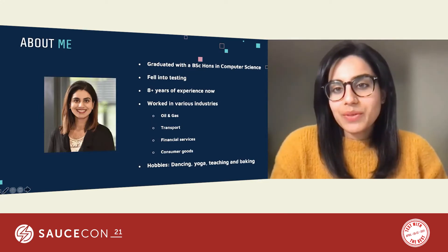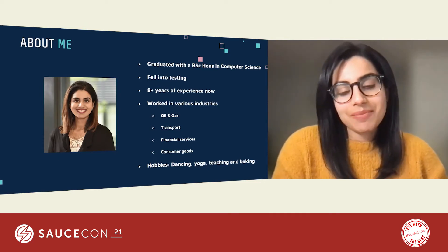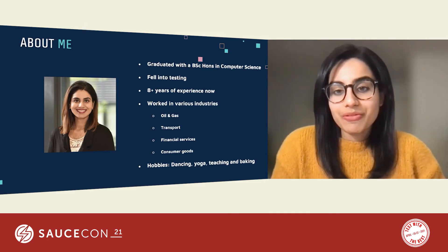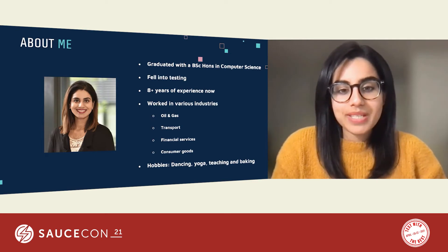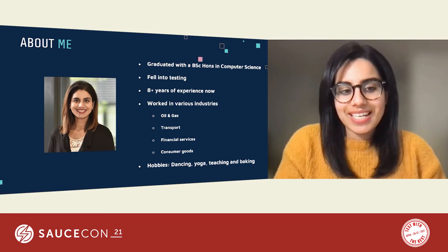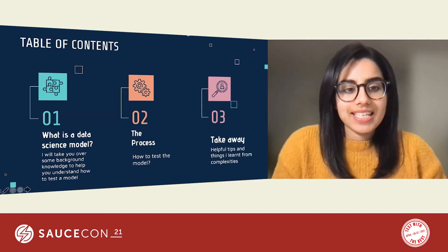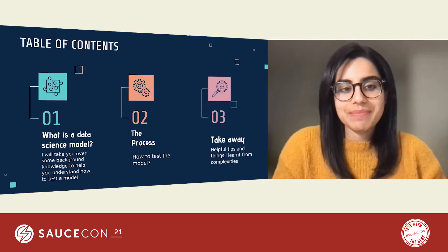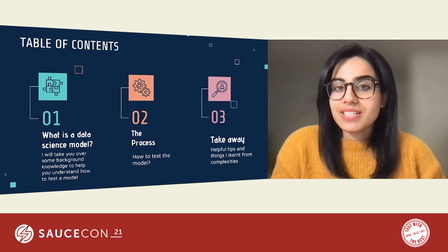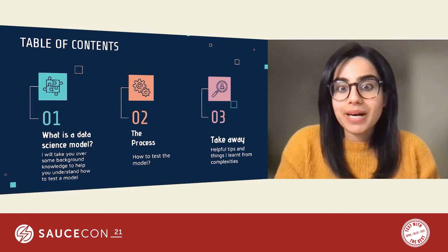About me: I've graduated with a BSc Honours in Computer Science. I fell into testing and I've got eight plus years of experience, working in various industries. Some of my hobbies include dancing, yoga, teaching and baking. The table of contents today is around what is a data science model — I'll explain everything from the very basics, the process around testing it, and some useful tips and information from my journey.